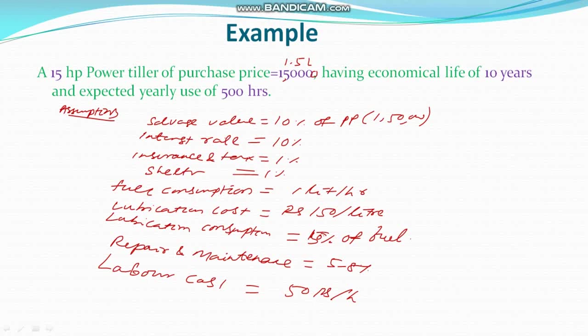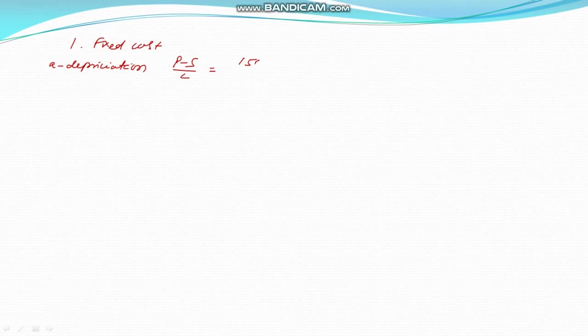Coming to the solution, we first calculate the fixed costs. Depreciation using the straight-line method: D equals (P minus S) divided by L, that is (1,50,000 minus 15,000) divided by 10 years, which equals 13,500 rupees per year.